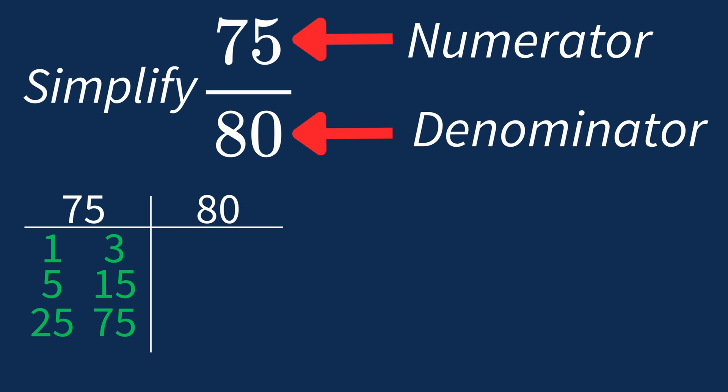For 80, the factors are 1, 2, 4, 5, 8, 10, 16, 20, 40, and 80. So the largest common factor between 75 and 80 is 5.